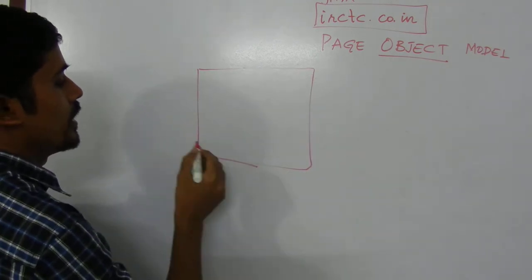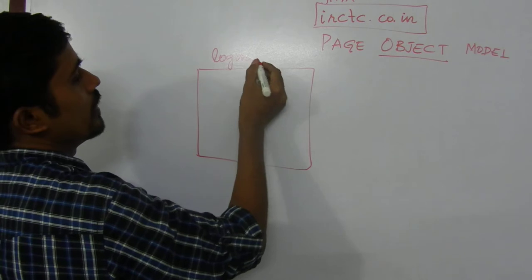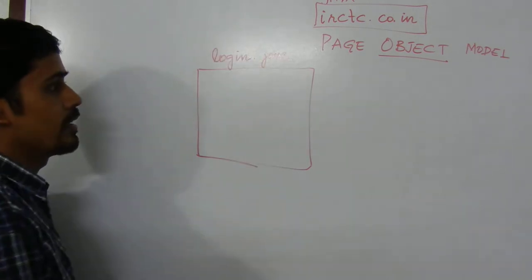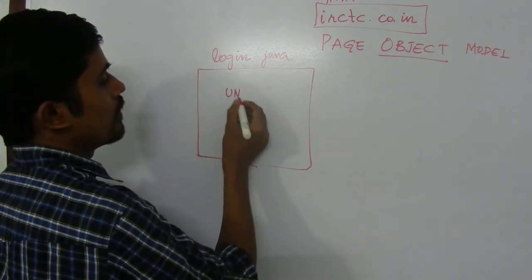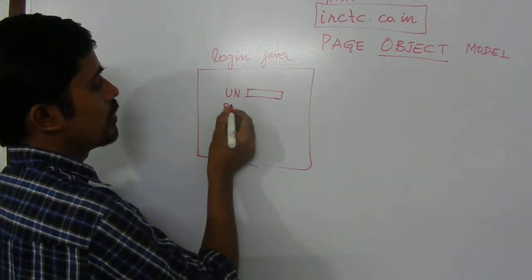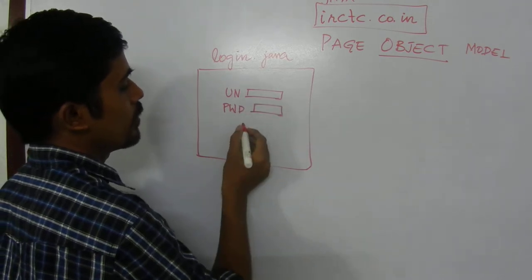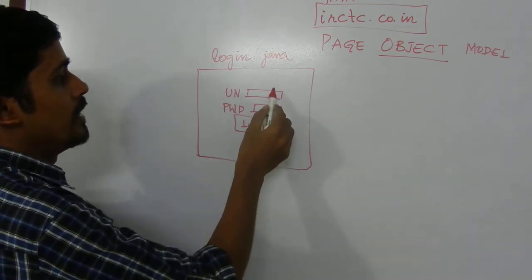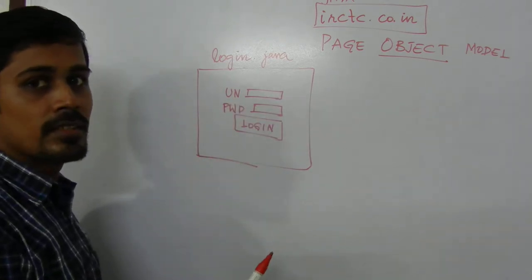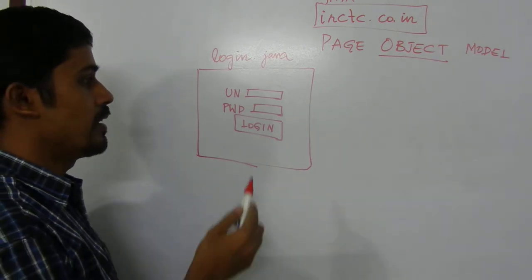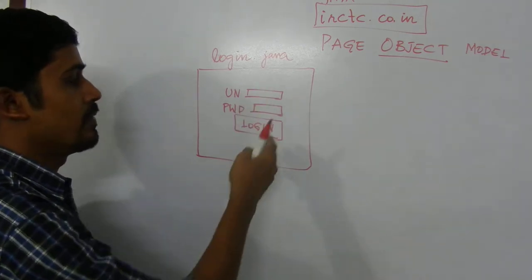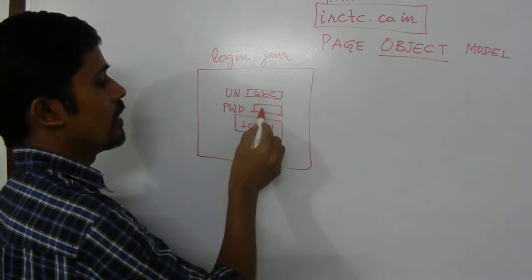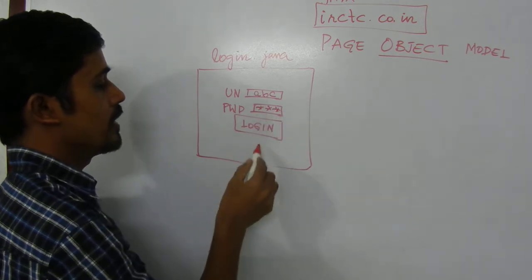We have the ircpc login page. In this login.java, we are going to build our username and we are going to pass our password. Once after entering username and password, we are going to click on this login button. We know how to identify these web elements from our early classes. We have already gone through what is WebDriver, what is test ID, and how we can identify these web elements. Once I am getting some ABC username and a password, and clicking login.